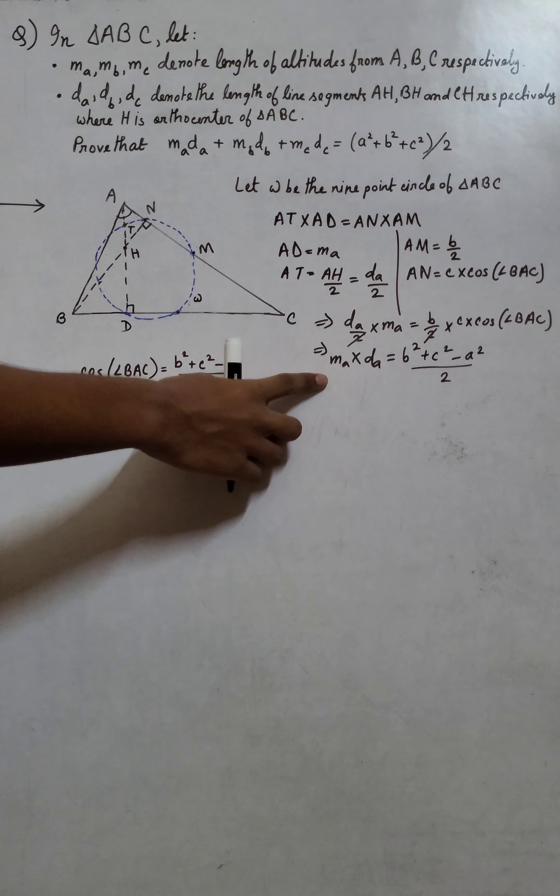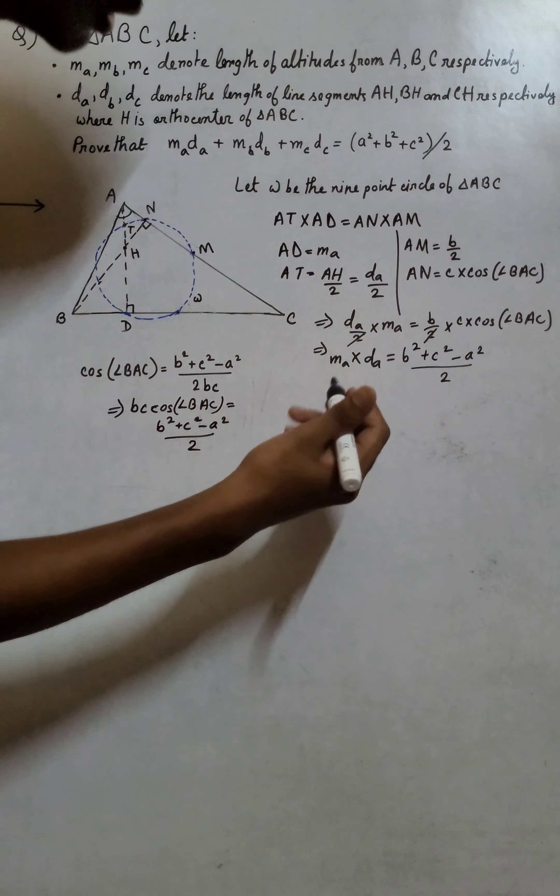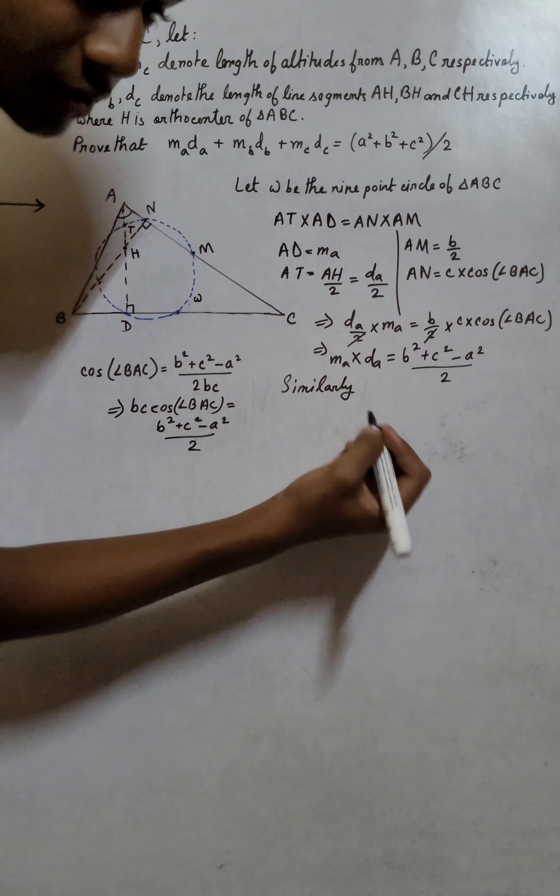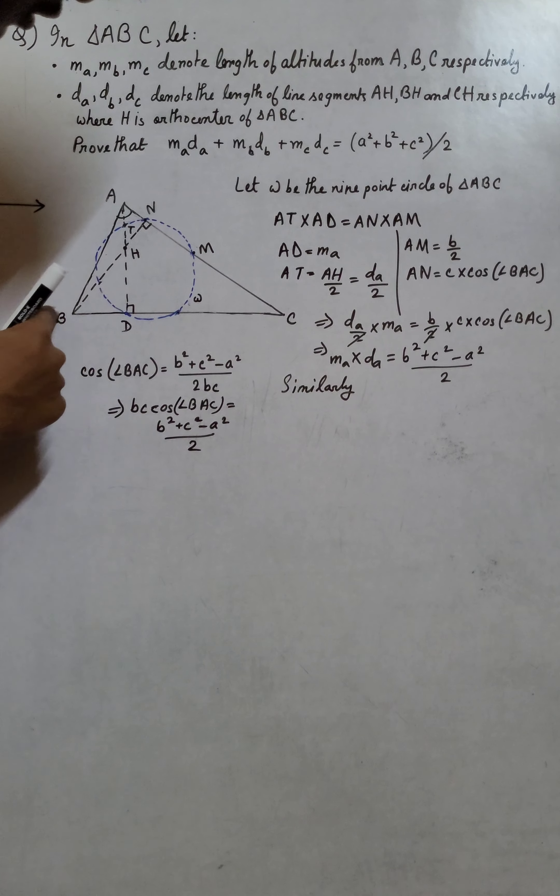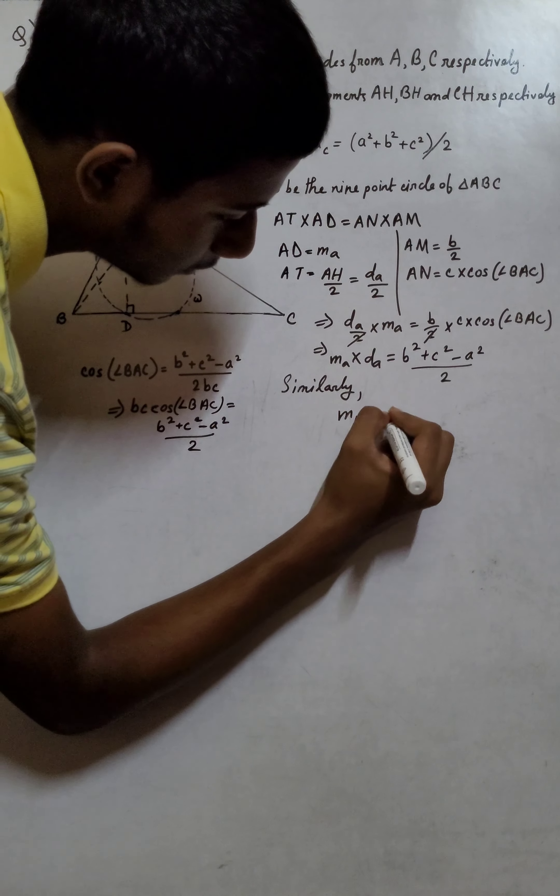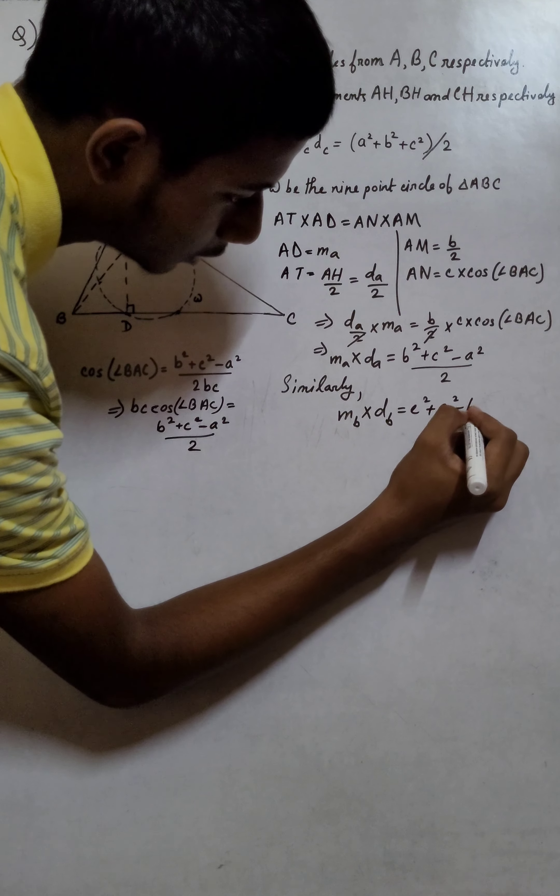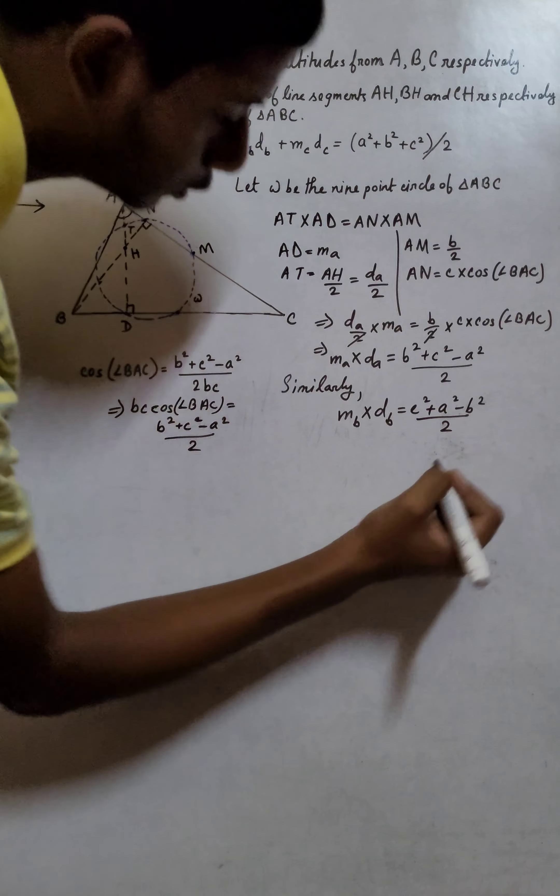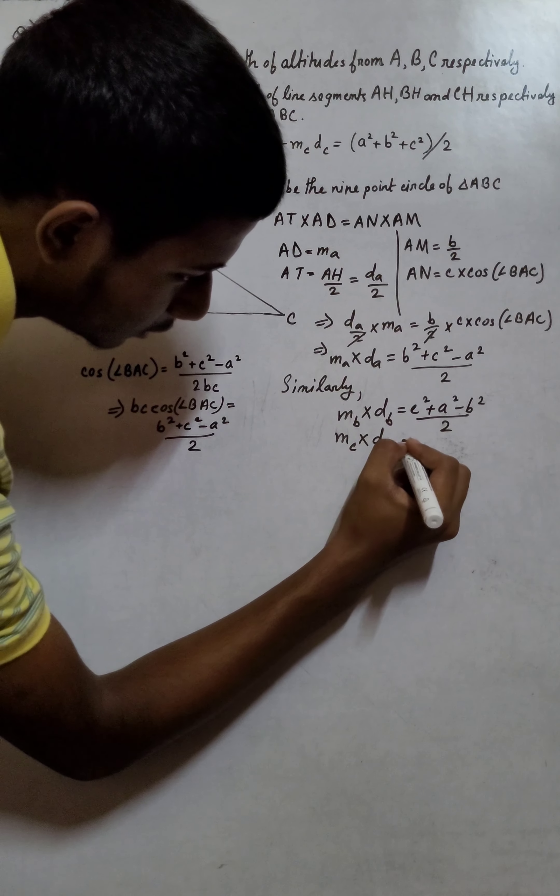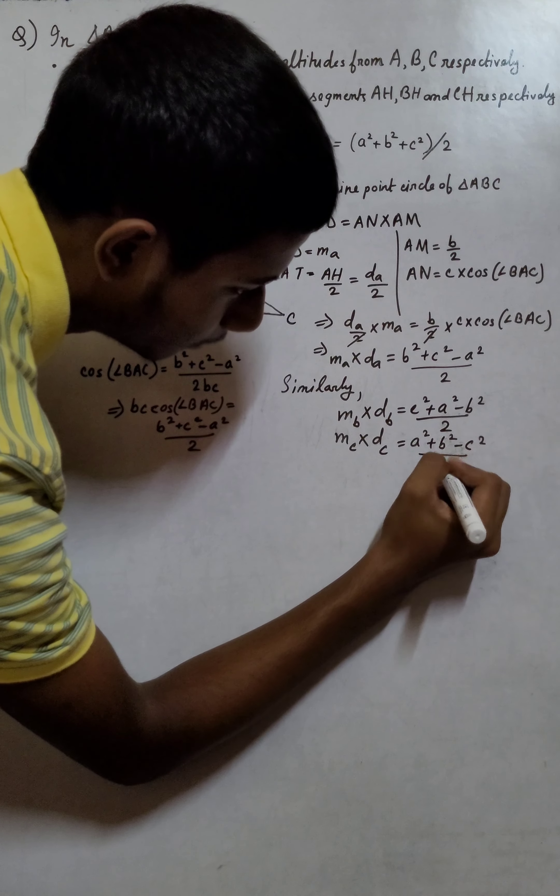We have obtained our first term's substitution. Proceeding similarly for vertices B and C, MB times DB equals (C² + A² - B²)/2, and MC times DC equals (A² + B² - C²)/2.